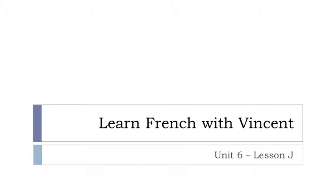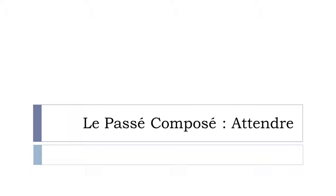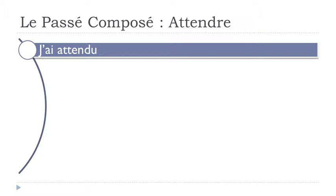Bonjour à tous and welcome to Learn French with Vincent. It's Unité 6, leçon J. In this lesson we'll discover together le passé composé and the verb is attendre. Attendre is 'to wait.' We'll see the past form — it's just some reviews that we are doing, but they are really important. J'ai attendu.